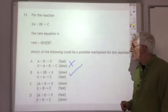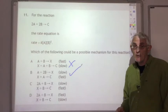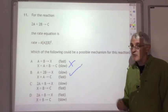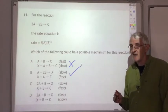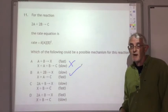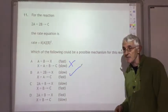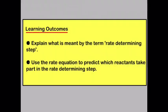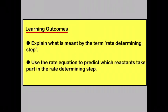That finishes all the notes for unit one. To recap the learning outcomes for this lecture: you should be able to explain what is meant by the term rate determining step, and use the rate equation to predict which reactants take part in the rate determining step.